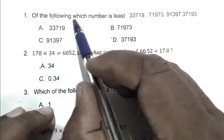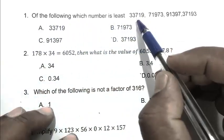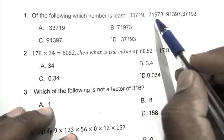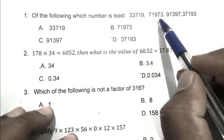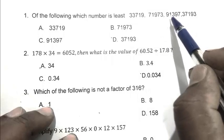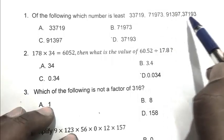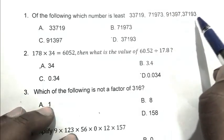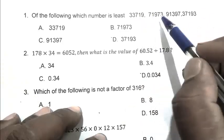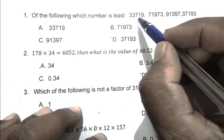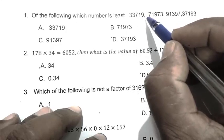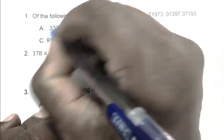Question number 1. Of the following, which number is least? 33,719, 71,973, 91,397, 37,193. If we closely watch the number, we find that 33,719 is least number. So A is the right answer.